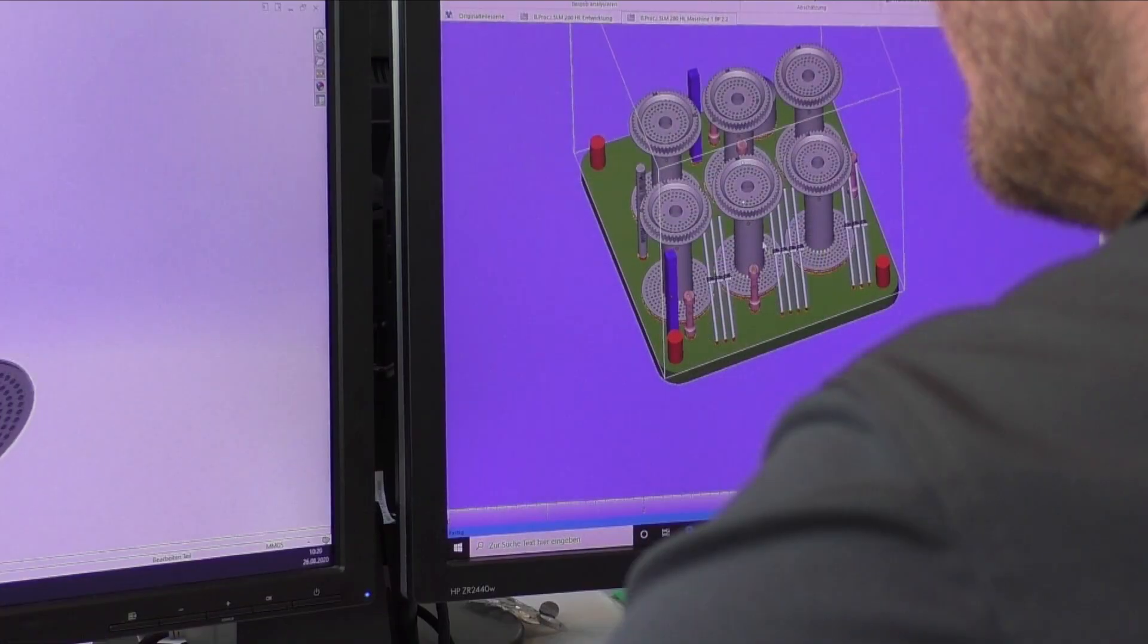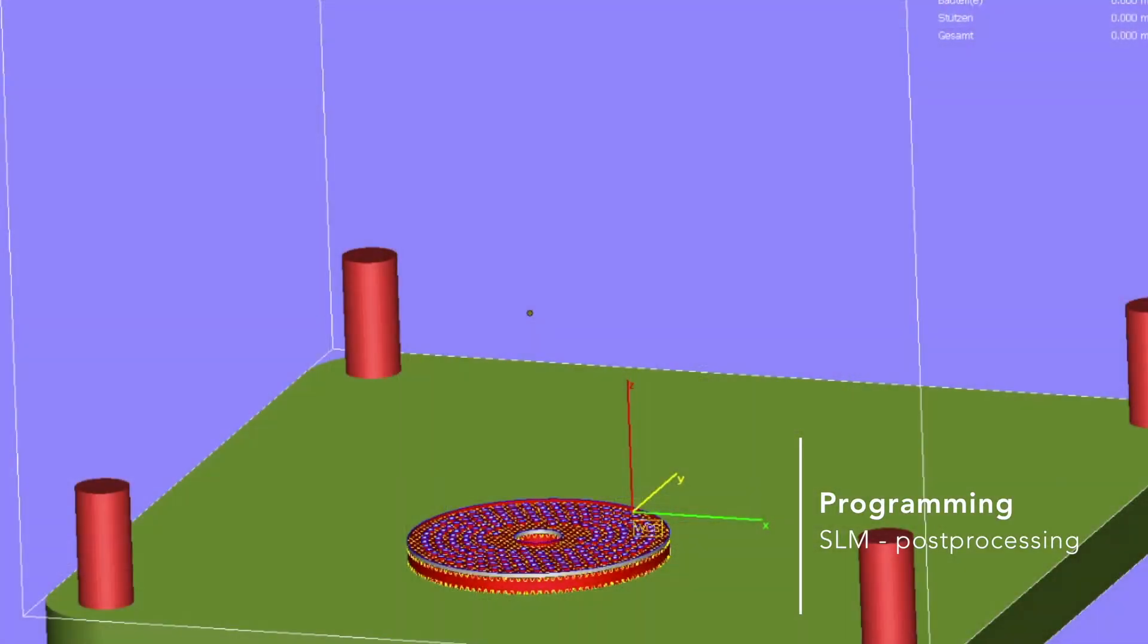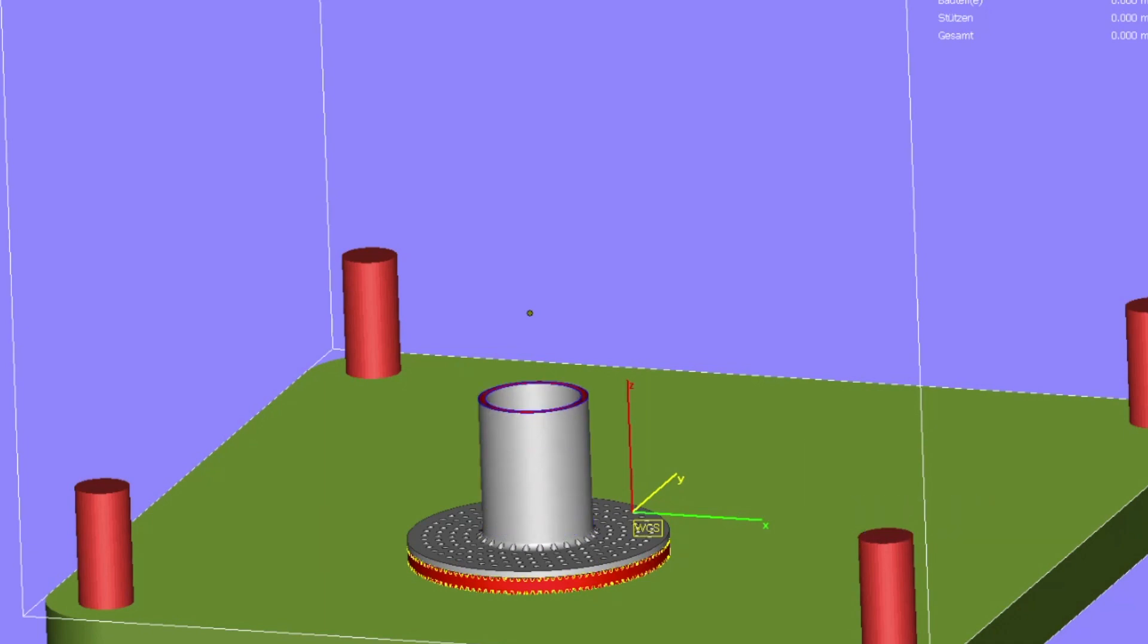Before production, every part gets prepared individually regarding specific requirements of the selective laser melting process.